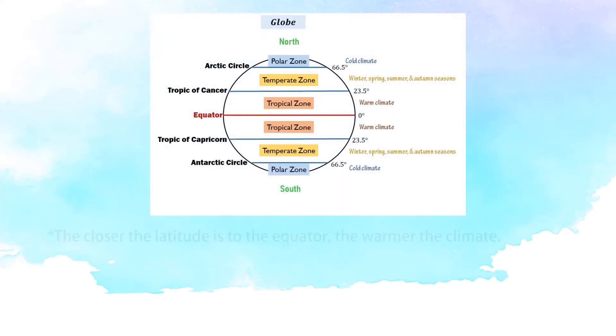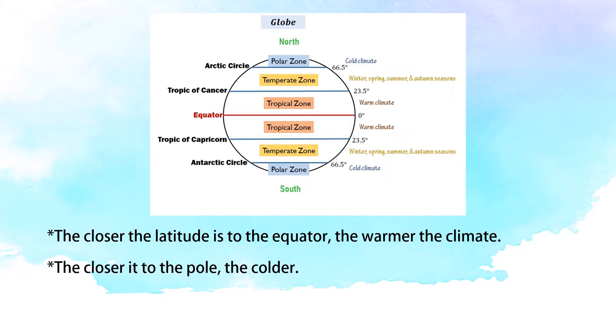We can infer that the closer the latitude is to the equator, the warmer the climate, while the closer it to the poles, the colder. Thus, there is a relationship between the latitude of a place and its climate.